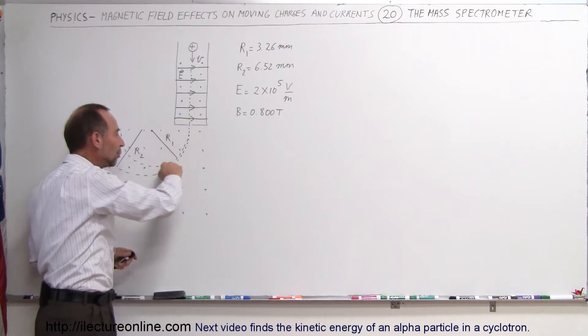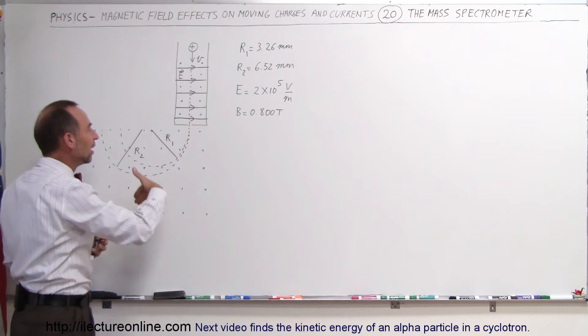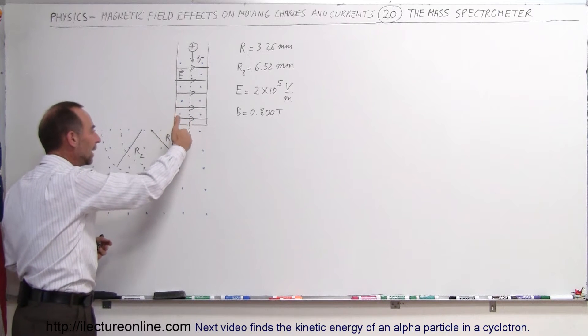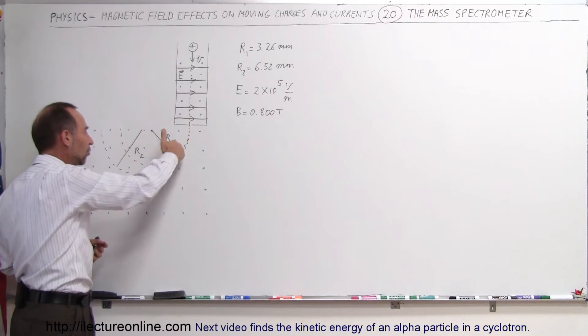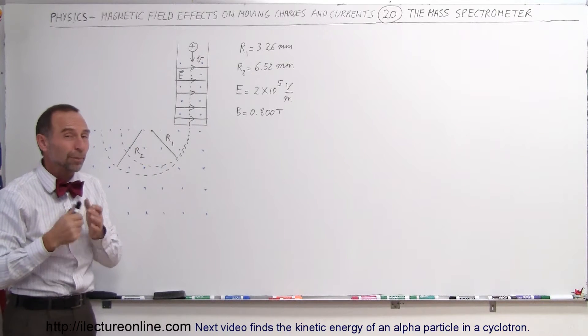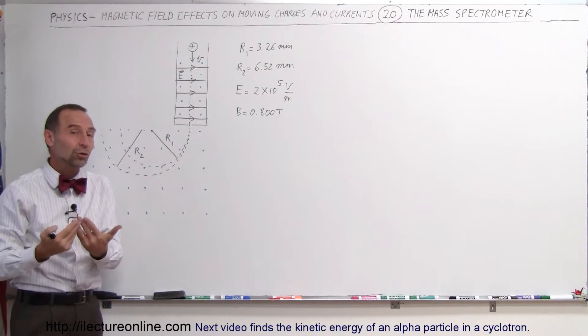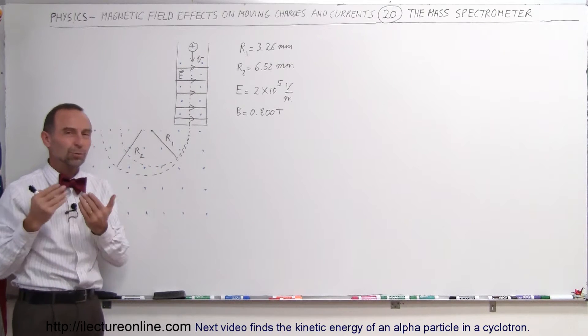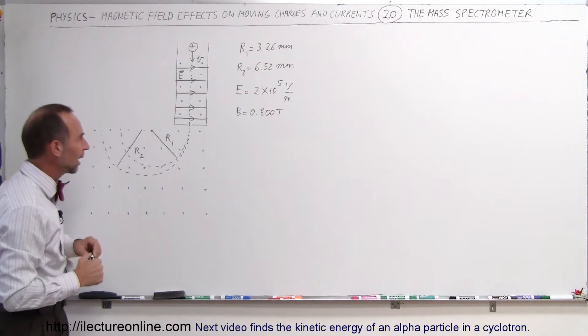Then as they get into this region right here where they're no longer being affected by the electric field, the magnetic field will now take over and cause the particles to move around in a circular path of various radii. That radius will depend upon the mass of those particles and that's how we determine, by measuring the radius, we can determine the mass of the particles.